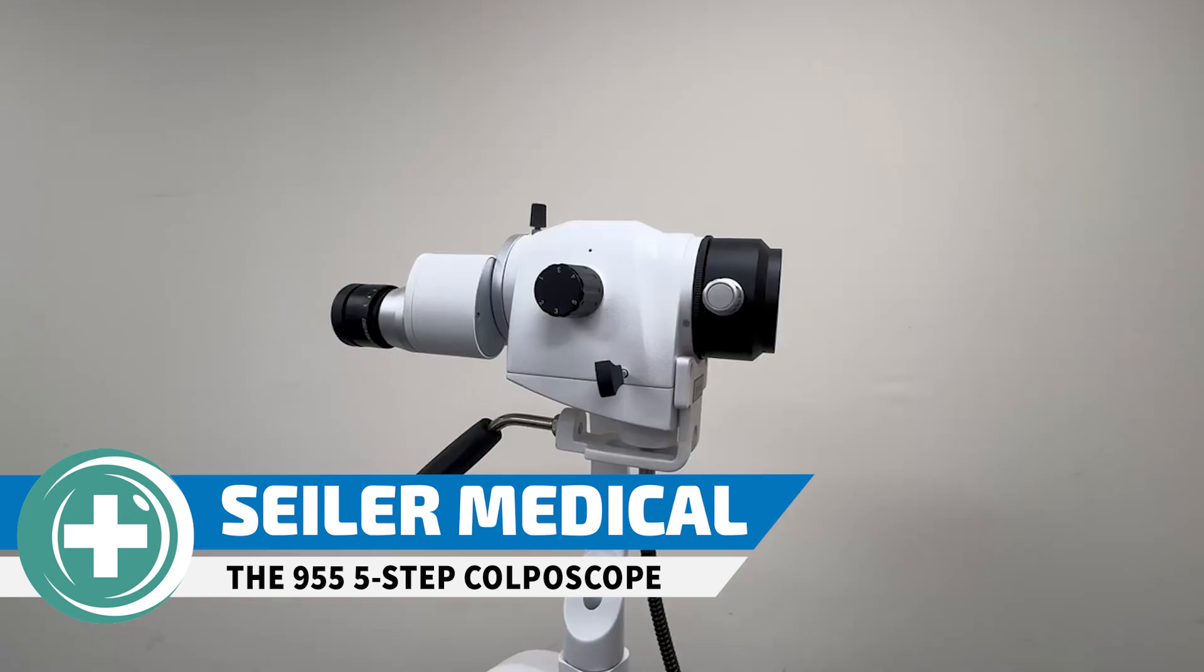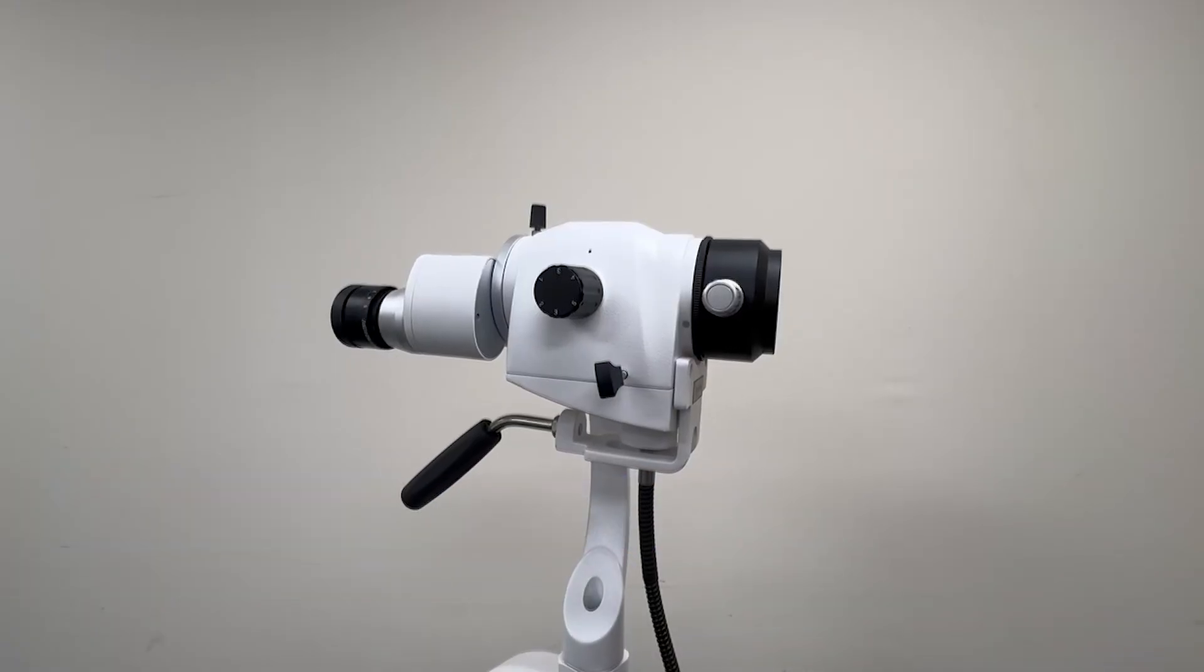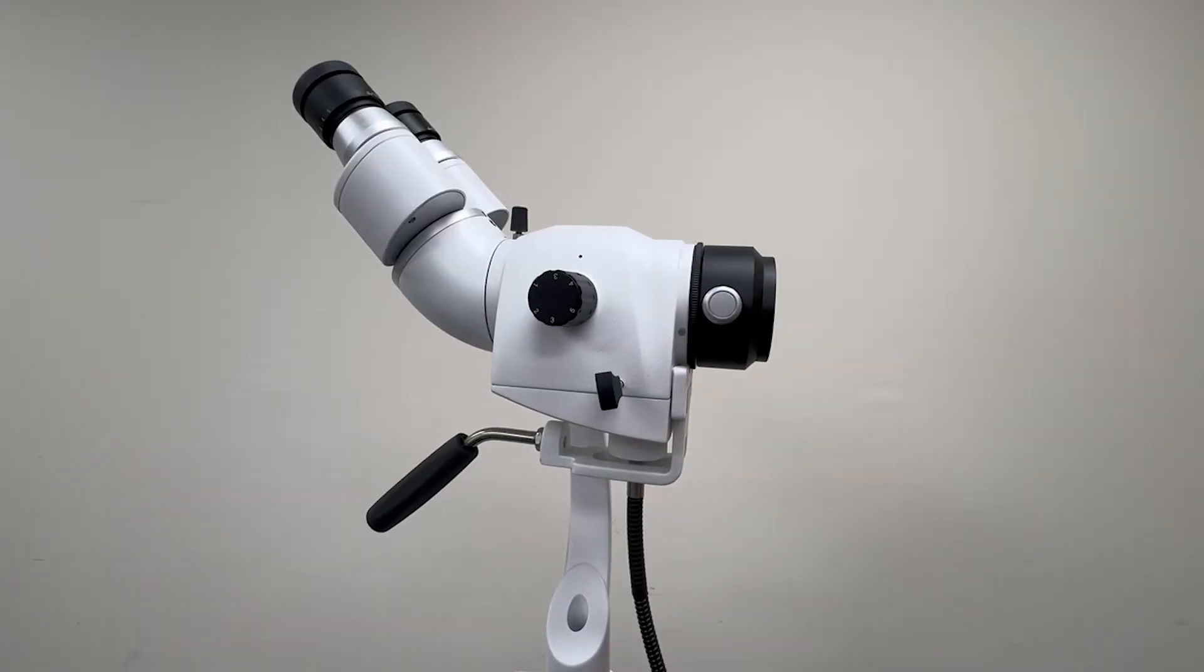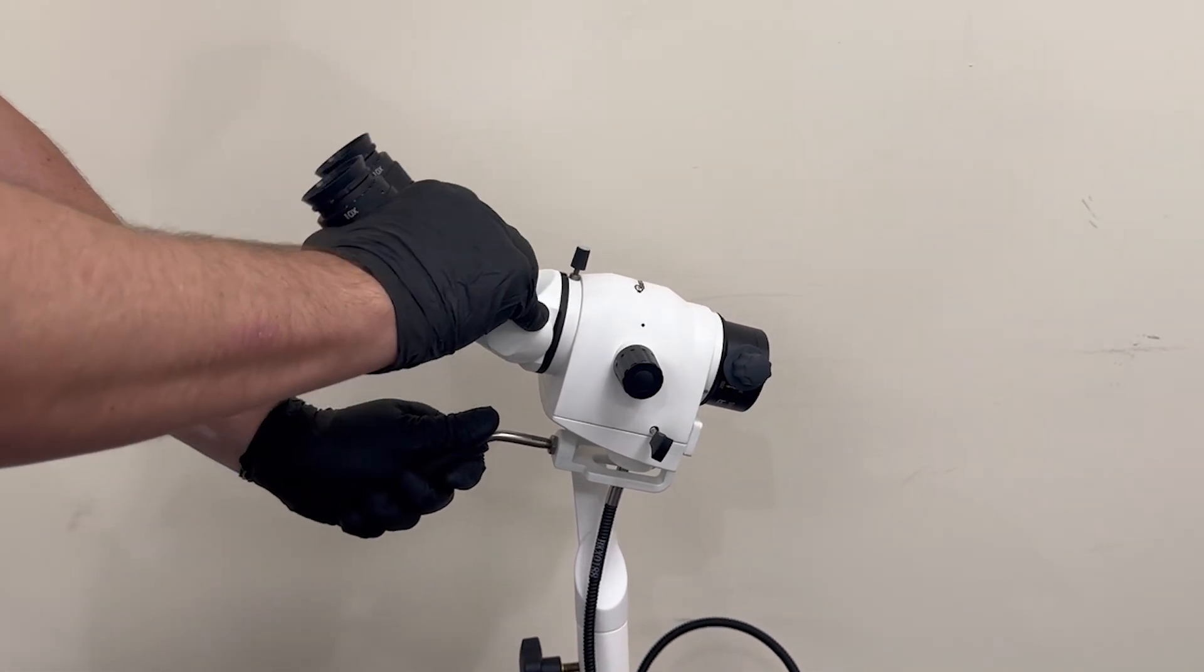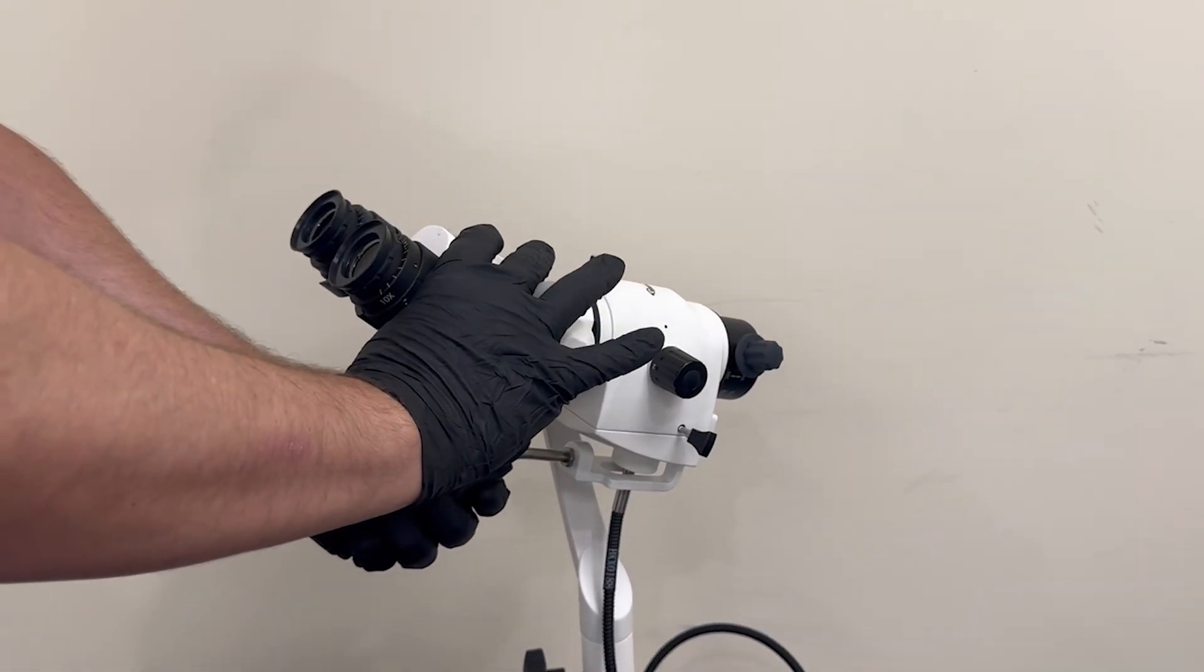The Siler 955 Colposcope comes equipped with an optional straight, fixed 45-degree head or an adjustable head that ranges from 0 to 220 degrees, ensuring optimal viewing angles for the doctor.